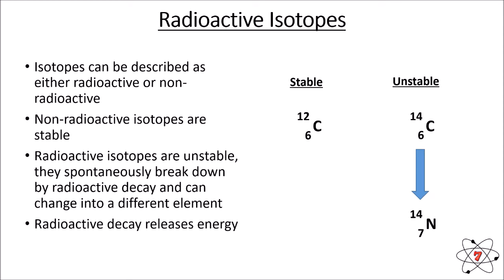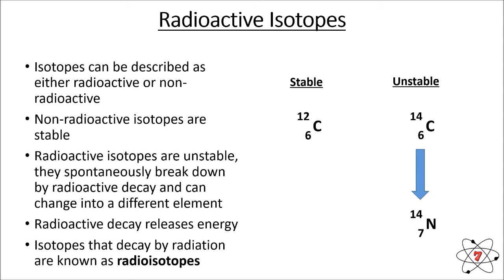Radioactive decay also releases energy, which is the main reason that radiation is harmful — your body is absorbing this energy. Isotopes that decay by radiation are known as radioisotopes, so carbon-14 is a radioisotope. More commonly known ones include uranium and plutonium, but lots of elements are actually radioactive and there are many radioisotopes.